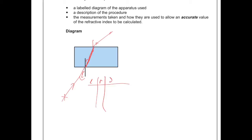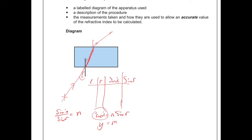You'll also need sine i and sine r values so you can produce a Snell's law graph. According to Snell's law, sine i over sine r equals the refractive index. So sine i equals n times sine r — that's like y equals mx. If you plot sine i on the vertical axis and sine r on the horizontal axis, you get a straight line whose gradient equals the refractive index.